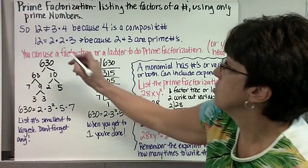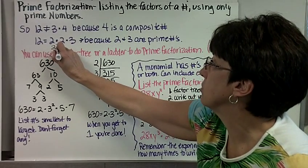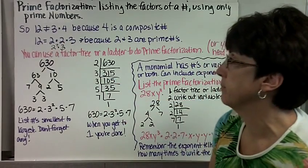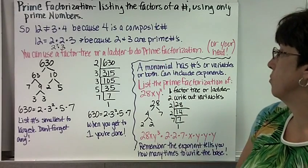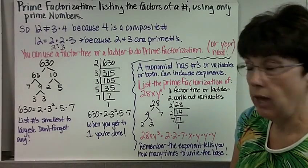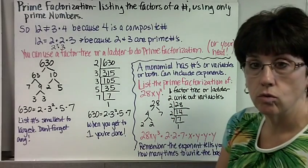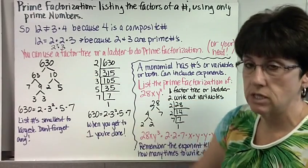We could also say 2 to the second power times 3. Now you can use a factor tree or a ladder to do prime factorization, or you could do it in your head. These are just tools until you become really familiar with it. So let's do the prime factorization of 630.